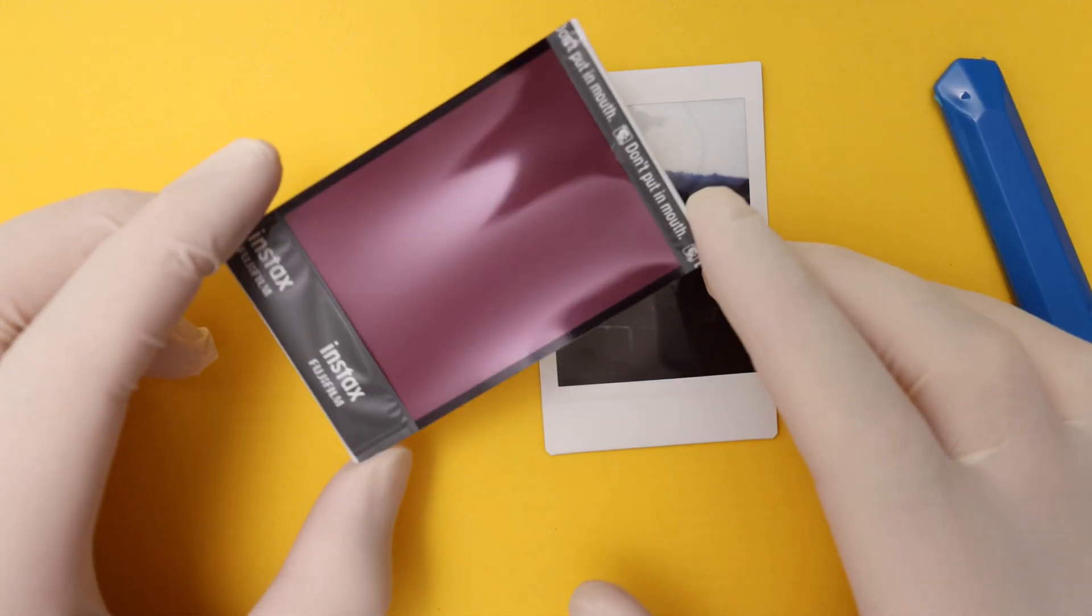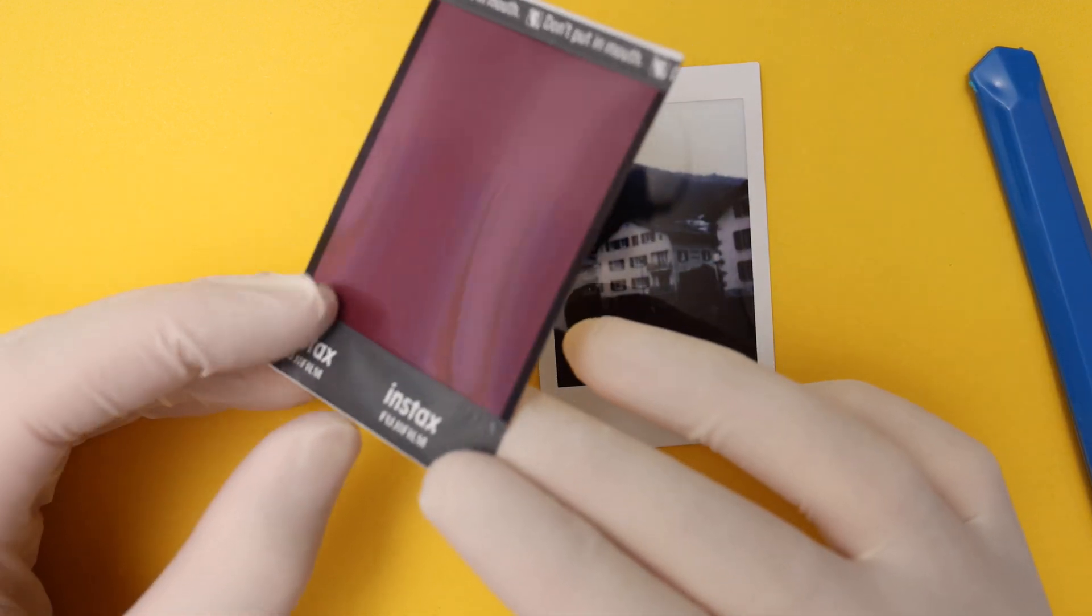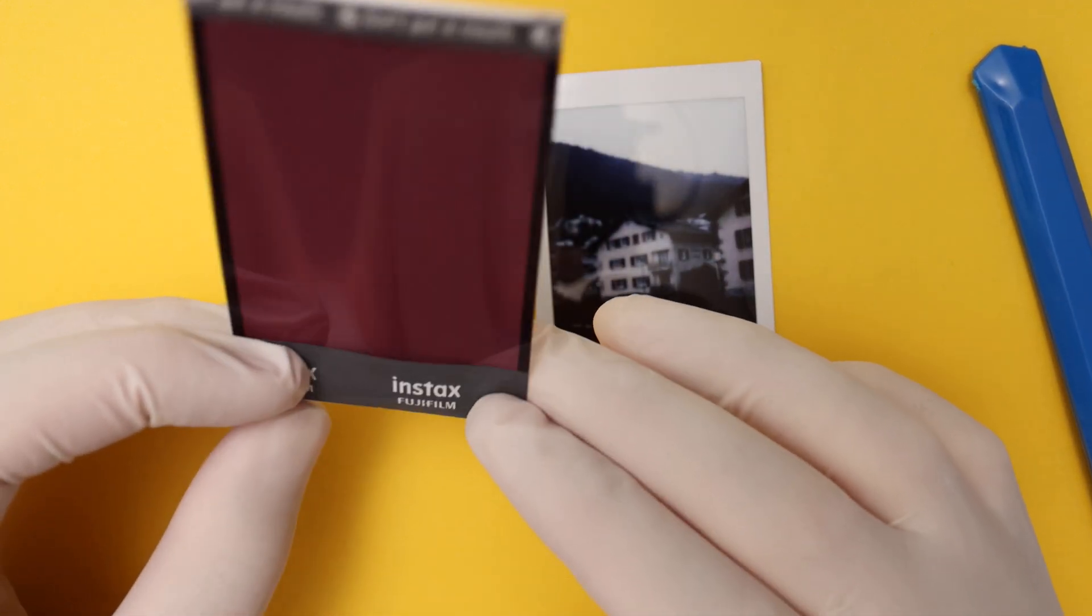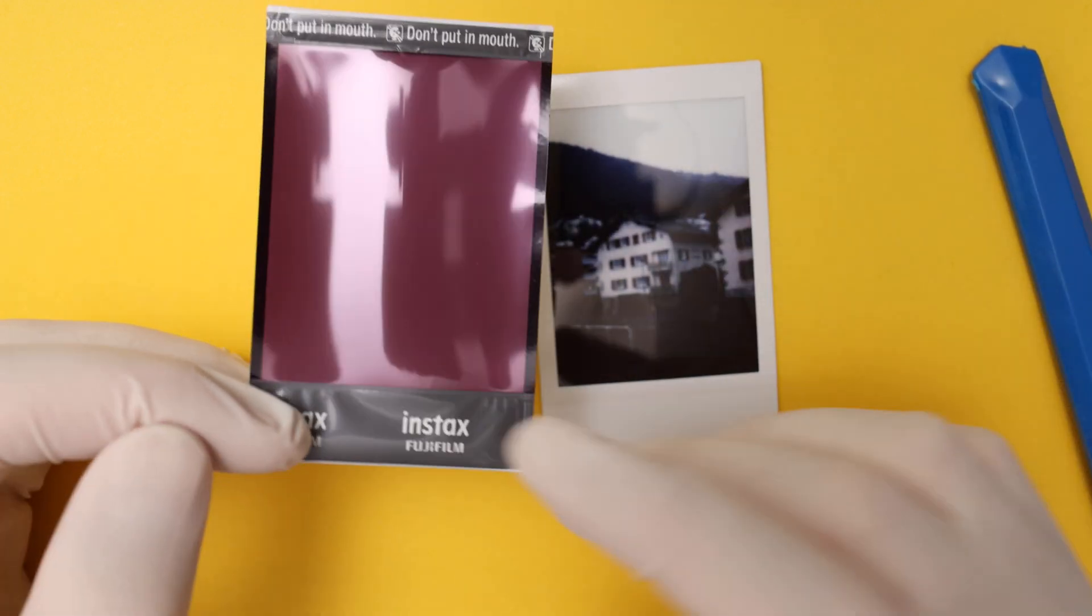The caustic chemicals will probably be like this gel-like substance so it's not gonna run all over. What I just did here was kind of bend it - you don't want to do this with any of the film, but the unexposed film is in a cartridge so this is not gonna happen.